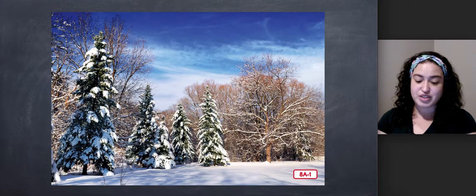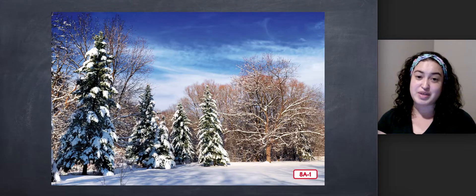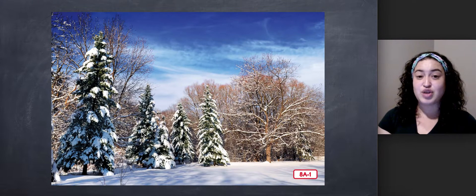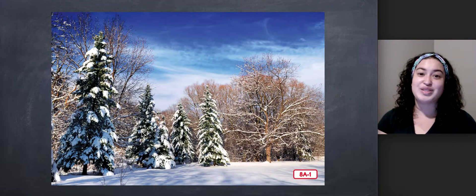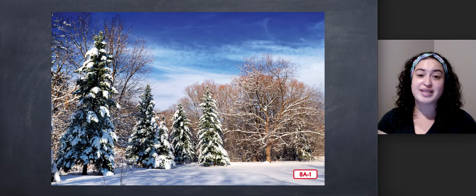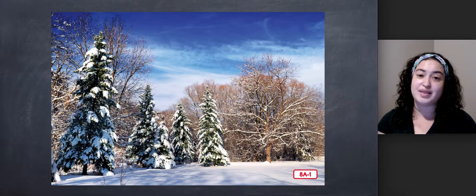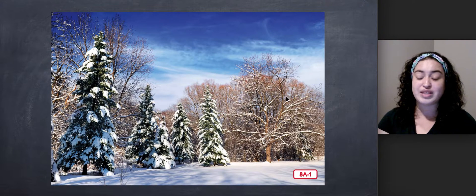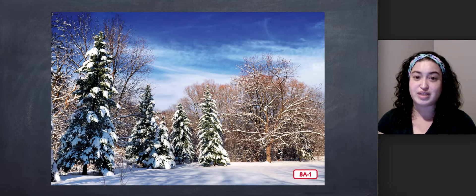An evergreen tree is easy to remember because it says 'ever,' which means always, and then 'green.' So an evergreen tree is always green. Even though it's winter here, these trees are always green because they are evergreen trees. Deciduous means trees that lose or shed their leaves in the fall and grow them again in the spring. Since this is a picture of winter in the forest, we know these are the deciduous trees because they already lost their leaves. Those trees are bare.